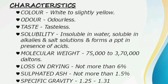General properties and characteristics of casein: it is white to slight yellow in color and has a taste. It is completely insoluble in water but soluble in alkalis or salt solution. It forms a precipitate in the presence of acids. Molecular weight ranges from 75,000 to 3,70,000 Daltons. Lozen ring not more than 6%. Sulphated ash not more than 1.5%. Specific gravity 1.25 to 1.31.